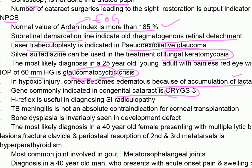The gene commonly implicated in congenital cataract is CRYGS3. H-reflex is useful in the diagnosis of S1 radiculopathy.